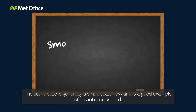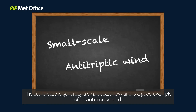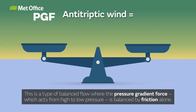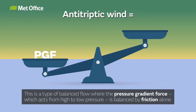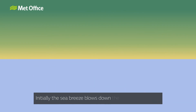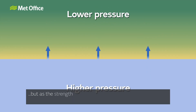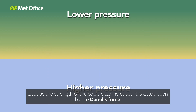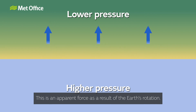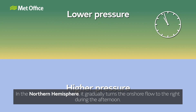The sea breeze is generally a small scale flow and it's a good example of an antitriptic wind. This is a type of balanced flow where the pressure gradient force, which acts from high to low pressure, is balanced by friction alone. Initially the sea breeze blows down the pressure gradient, but as the strength of the sea breeze increases it is acted upon by the Coriolis force — an apparent force as a result of the Earth's rotation. In the Northern Hemisphere it gradually turns the onshore flow to the right during the afternoon.